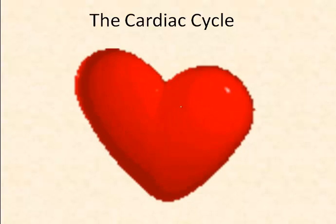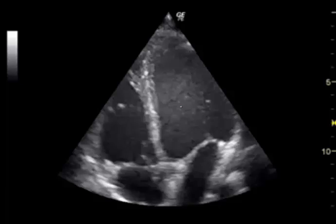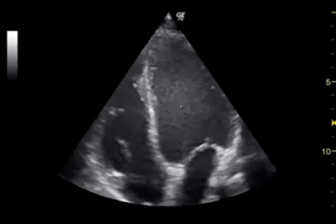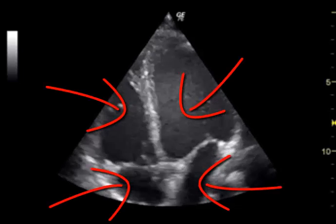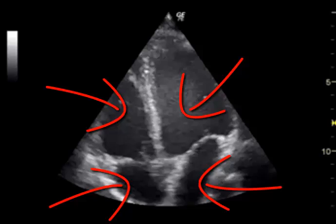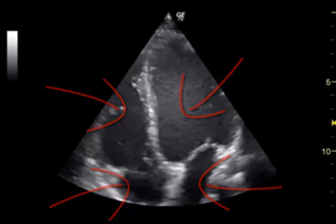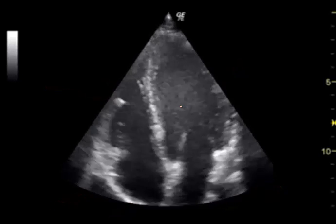The cardiac cycle. We're watching an ultrasound of an inverted heart as it beats. You can see all four chambers and the atrioventricular valves opening and closing as blood flows through the heart. What causes the heart to beat in synchronicity like this?